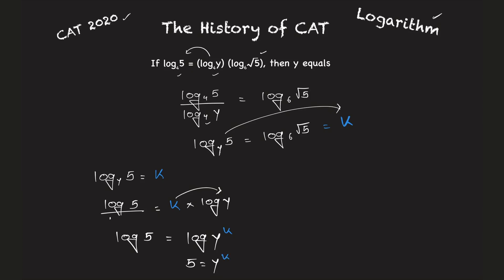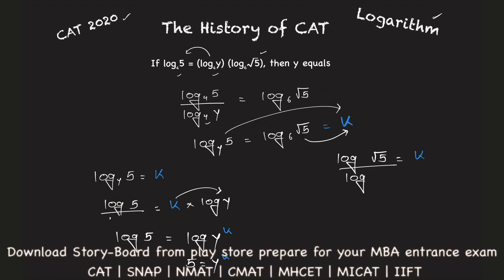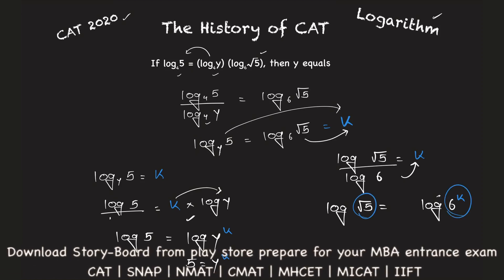Now solving the second part: log to the base 6 of square root of 5 equals k. Similarly, writing this as log of square root of 5 upon log 6 equals k. So log 6 multiplies across, giving log of square root of 5 equals k times log 6. By the property of logs, the k goes to the exponent, so square root of 5 equals 6 raised to k.